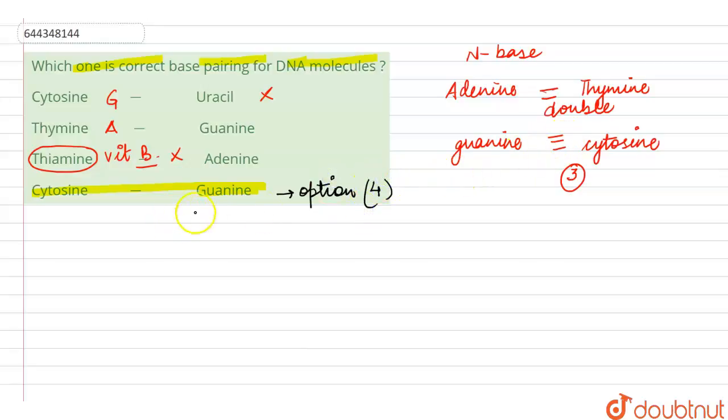Guanine is a purine having a double membered ring. So this double membered ring has got nitrogen at one, three, seven, and nine position. Whereas cytosine has got nitrogen at one and three position and it is a single membered ring.